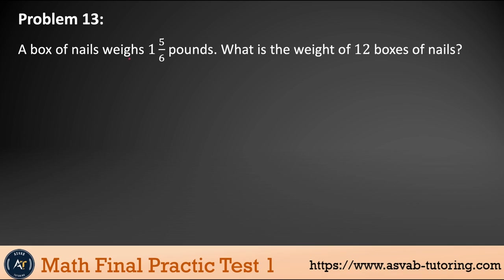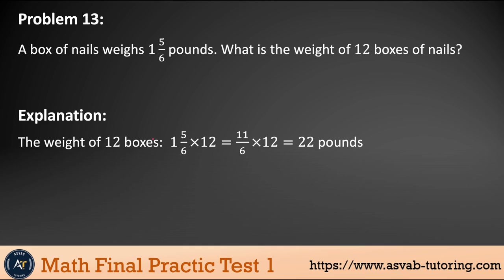Problem 13: A box of nails weighed 1 and 5/6 pounds. What is the total weight of 12 boxes? Convert the mixed number to an improper fraction, then multiply by 12. Multiply top to top and bottom to bottom, then simplify. The result is 22 pounds.